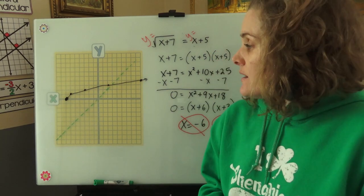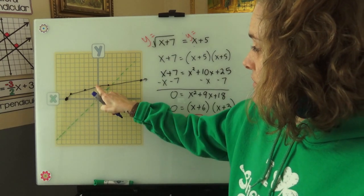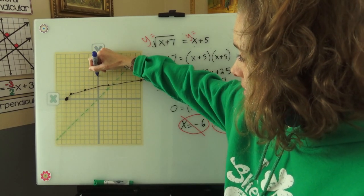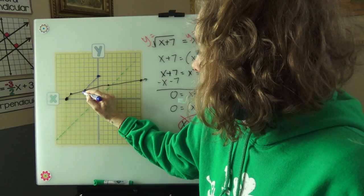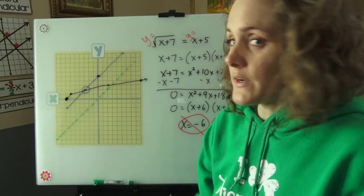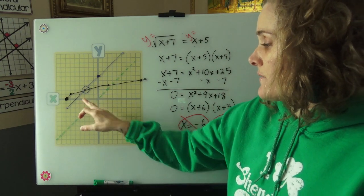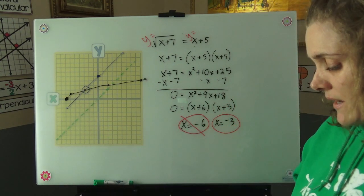It's a little squiggly but... Now I'll graph x plus 5. 1, 2, 3, 4, 5. Here's our y-intercept. So you can see here is our intersection point and that is at x equals negative 3, which is the reason why we have that x equals negative 3.